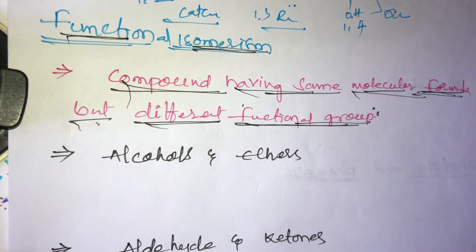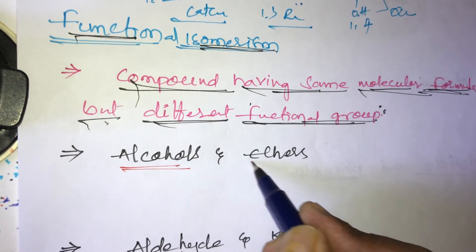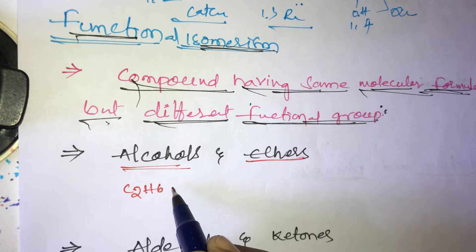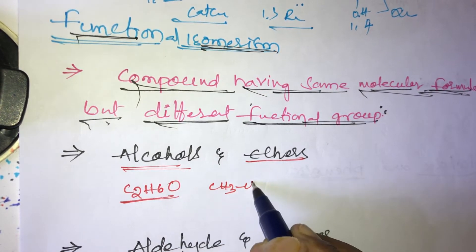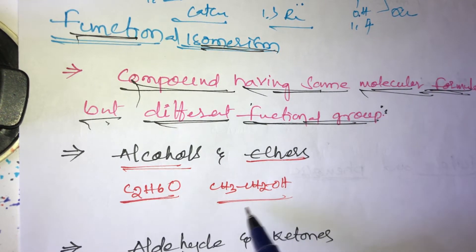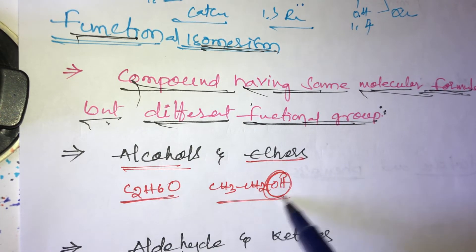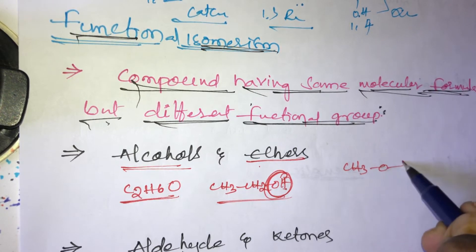Now, an example of functional isomers — alcohols and ethers have the same molecular formula. For example, take C2H6O. For alcohols, we can write CH3CH2OH, which is ethyl alcohol. The functional group here is OH, the alcohol functional group.